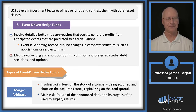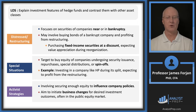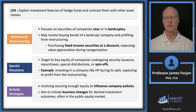Other event-driven strategies include distress situations — companies nearing bankruptcy or restructuring — and special situations, where reading the Wall Street Journal really pays off: massive share repurchases like a Dutch auction, spin-offs, and any other special corporate situations.